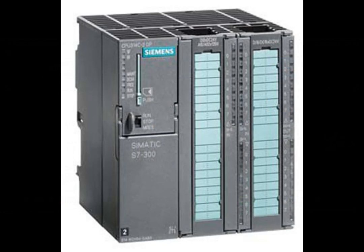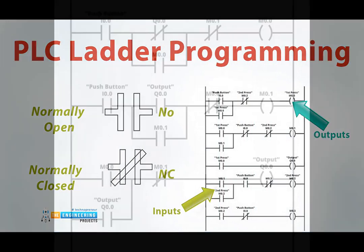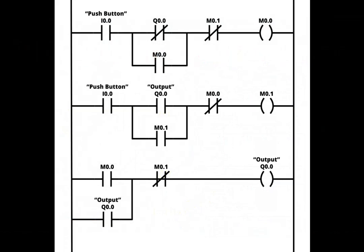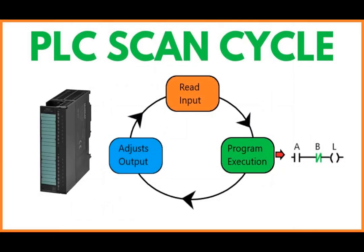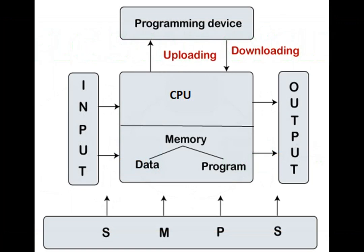PLCs contain a central processing unit (CPU) that executes a program written in a specialized programming language such as ladder logic. This program consists of a set of instructions that determine how the PLC should respond to different inputs and conditions. The logic typically follows a scan cycle where the PLC reads inputs, executes the program, and updates outputs.